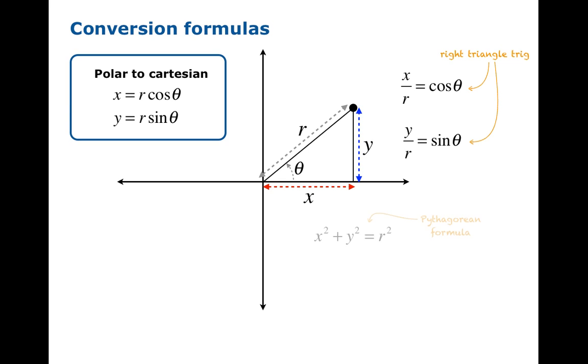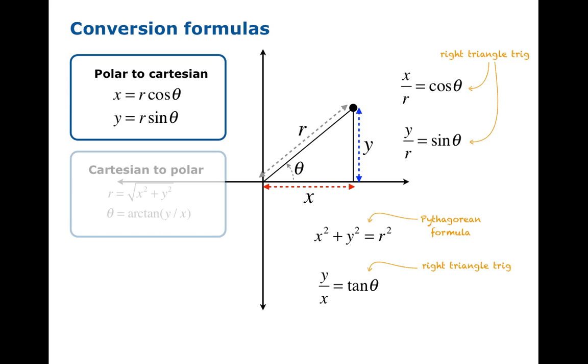How about going in the other direction? Well, you've got the Pythagorean formula. It tells you x² + y² = r². And you've also got another trig function up your sleeve. tan θ is the ratio of y to x. So you could try to solve these guys for r and theta. You'd get r equals √(x² + y²), and θ equals arctan(y/x).